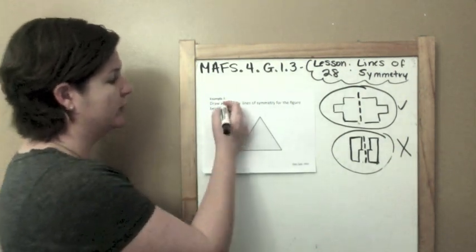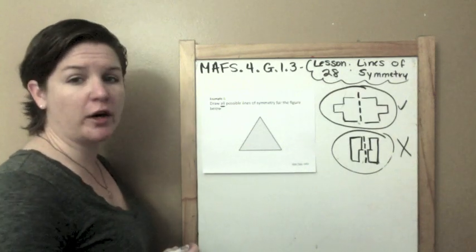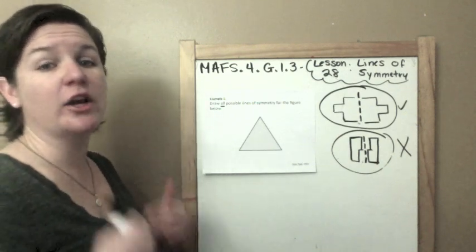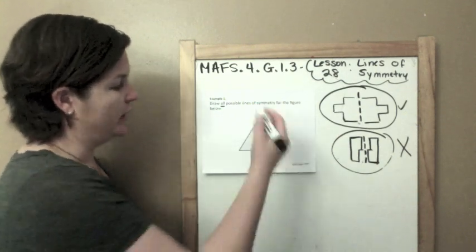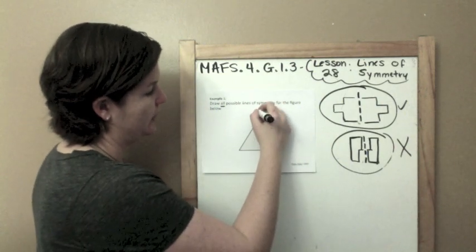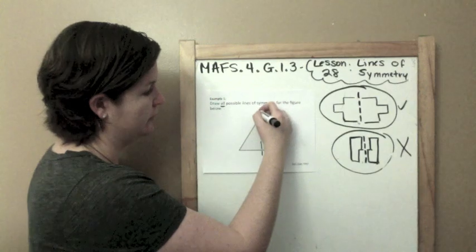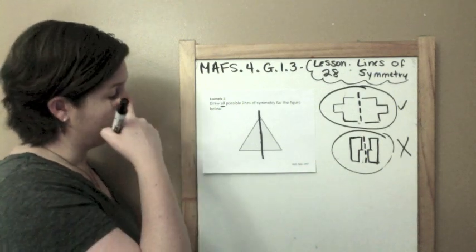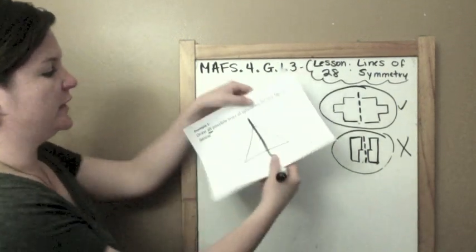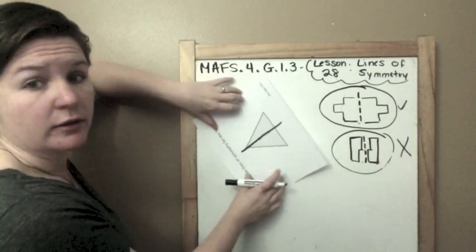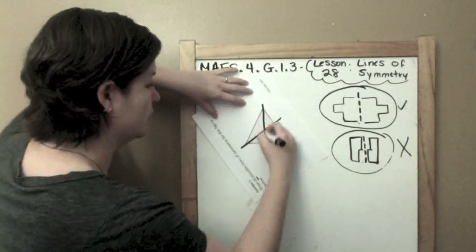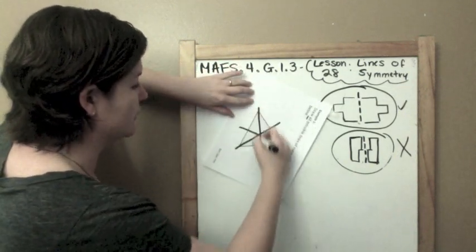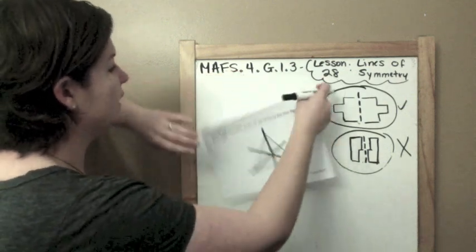Draw all possible lines of symmetry for the figure below. This is a graphic response item display. That means you are interacting with the graphics that you see. So right here, I see that if I were to go down the middle, straight down the middle, and I were to fold it, this side would match this side. Okay, now also, if you take it and turn it, here, you'll notice you have the same thing. Okay, and then one final time, take it and turn it. So this item has three lines of symmetry.